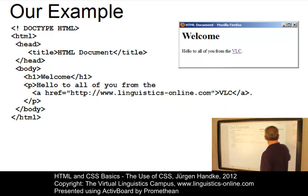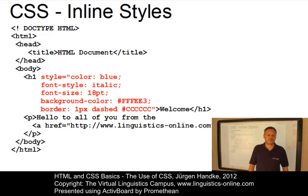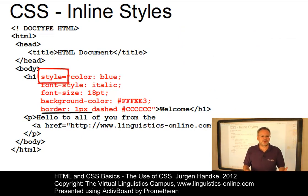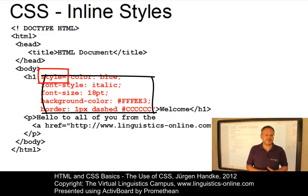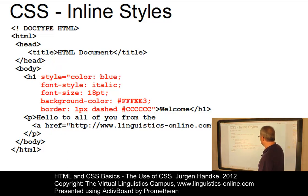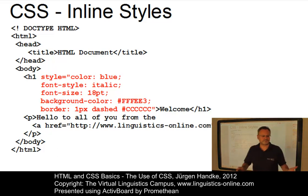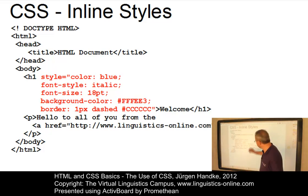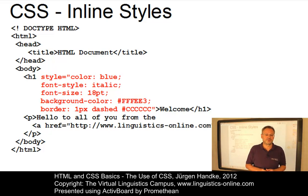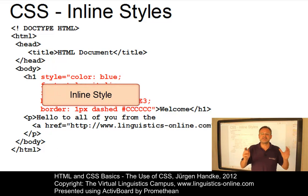To achieve these effects, this is what we could do. We use the style attribute with a set of values within the h1 tag. For example, we could use the value color blue, font style italic, font size 18 points, background color light yellow — this is the hexadecimal code — border around it one pixel in size dashed and in grey color. Since the style attribute and its values are directly integrated within the HTML code in the body of a document, this use of styles is referred to as inline style.